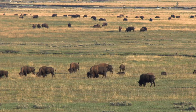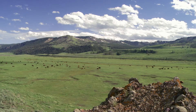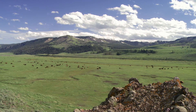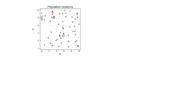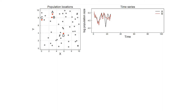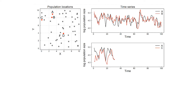This is known as population synchrony, and the effect weakens the farther away populations are from each other. Two different populations of a species, A and B, are near each other and experience environmental changes in a similar way. More distant populations, for example A and C, will show less population synchrony due to environmental fluctuations, and populations A and D show even less synchrony.